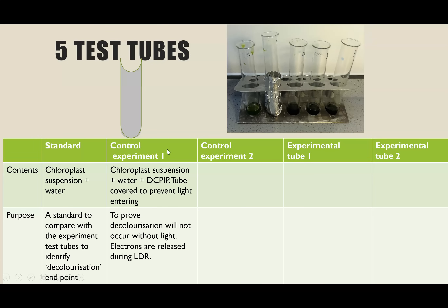Control experiment one is covered in foil. Inside the test tube is still the chloroplast suspension, distilled water, and DCPIP — but the test tube is covered in foil to prevent light from reaching the solution. The purpose of this control is to prove that DCPIP will not decolorize when there isn't light, showing us that electrons are only released when light is available. We're expecting no color change at all in this test tube, proving that light is required.